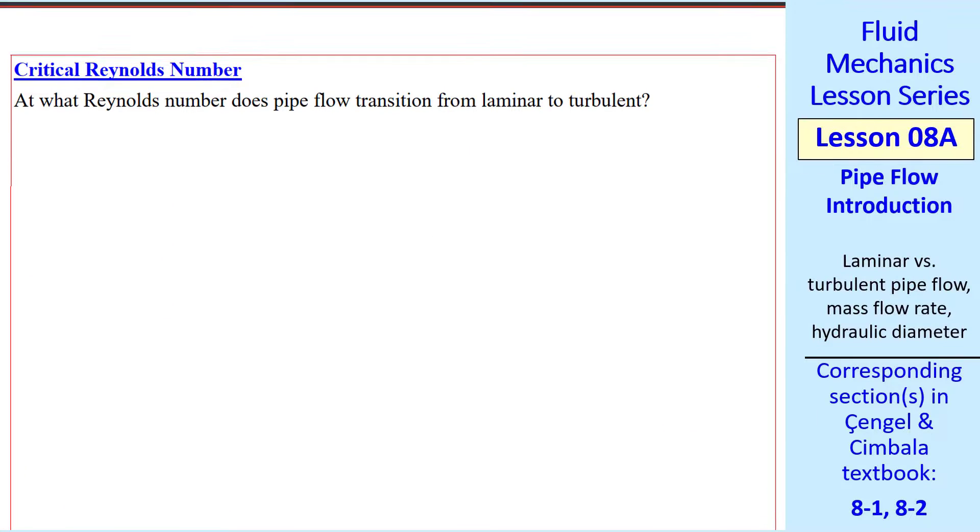This leads to a discussion of critical Reynolds number. In other words, at what Reynolds number does pipe flow transition from laminar to turbulent? First, let's define the Reynolds number. For a given pipe flow, we have some average speed v, pipe diameter d, and flow properties mu and rho. Note that d is the inner diameter, of course.